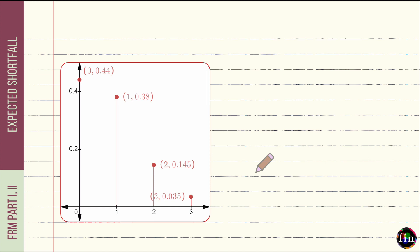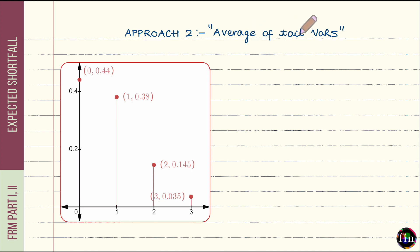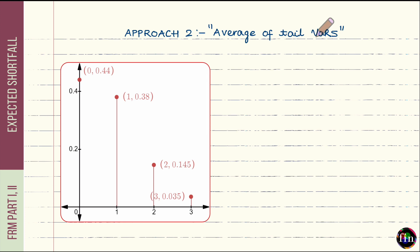Now let us move on to approach number 2. In this approach, expected shortfall is calculated as a simple average of tail VaRs — not a probability-weighted average of losses but a simple average. The number of tail VaRs depends on how many slices we divide the right tail into. We divide the tail into many equal-probability slices, compute the VaR for each slice, and take a simple average. More slices yields a better estimate.